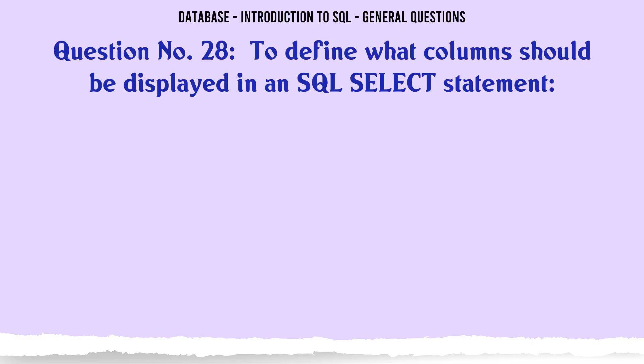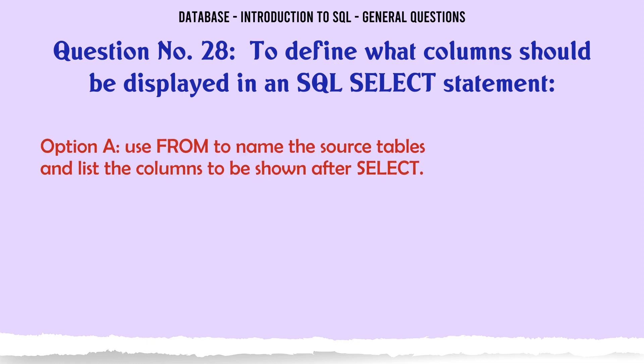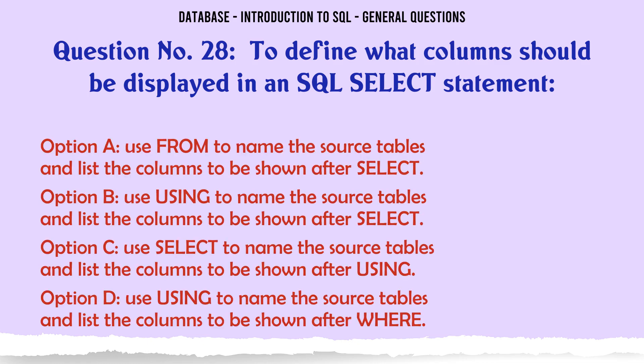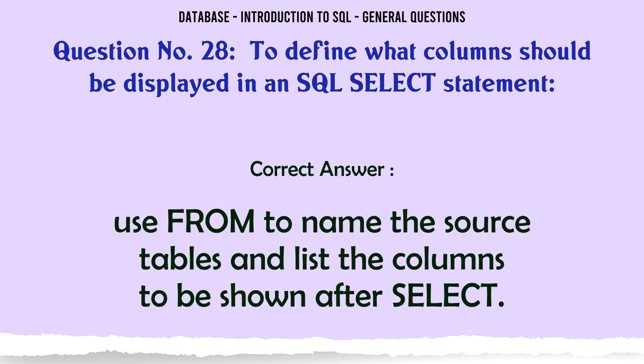To define what columns should be displayed in an SQL SELECT statement: A. Use FROM to name the source tables and list the columns to be shown after SELECT. B. Use USING to name the source tables and list the columns to be shown after SELECT. C. Use SELECT to name the source tables and list the columns to be shown after USING. D. Use USING to name the source tables and list the columns to be shown after WHERE. The correct answer is: use FROM to name the source tables and list the columns to be shown after SELECT.